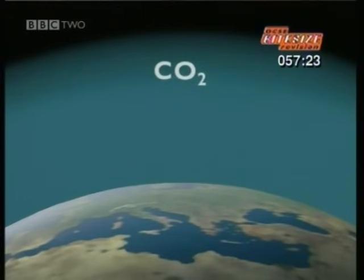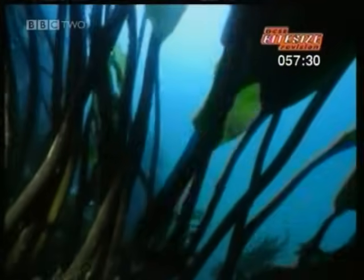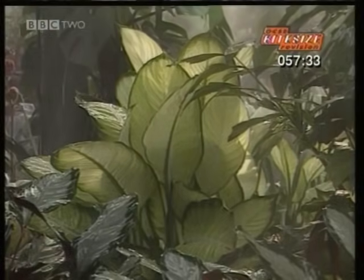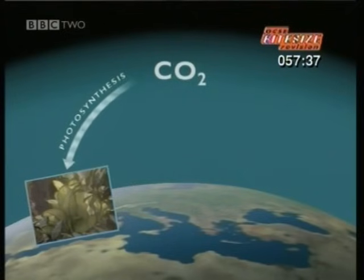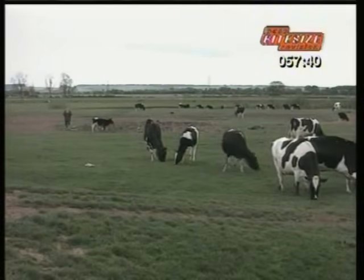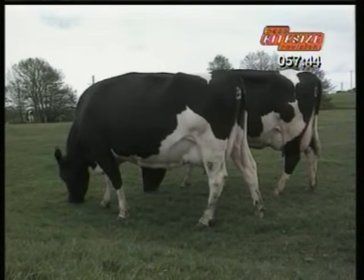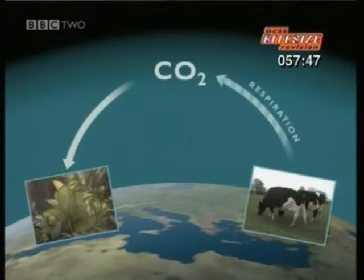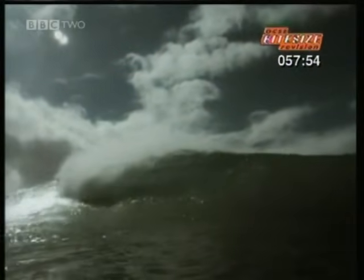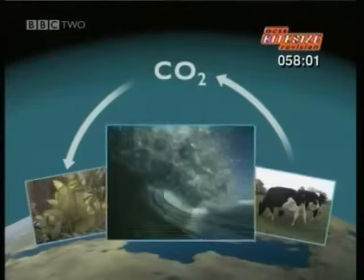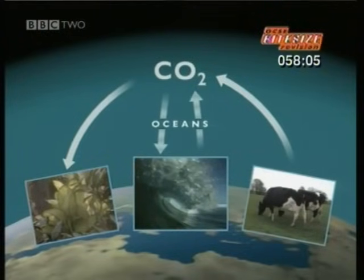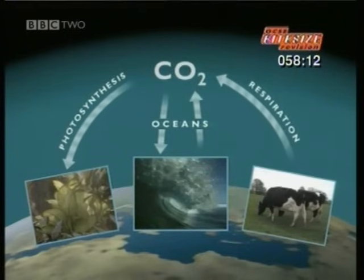The level of carbon dioxide in the air depends on many different processes. Photosynthesis uses carbon dioxide as a raw material to produce sugars, so plants take carbon dioxide out of the atmosphere. Both animals and plants get their energy by respiration, a chemical reaction which releases carbon dioxide into the atmosphere. Carbon dioxide dissolves in the ocean, but this is a two-way process — when the sea gets warmer, some of the carbon dioxide comes out of solution and passes back into the atmosphere. Natural processes like these balance out, so that the tiny percentage of carbon dioxide in the air is maintained.